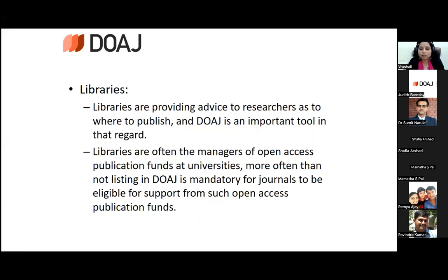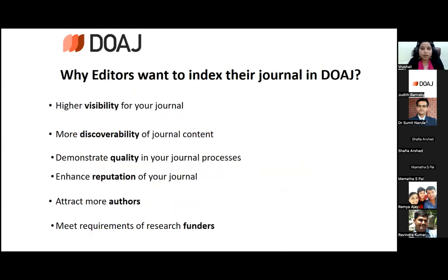For libraries — as I am a librarian — it is helpful because we often face problems with finance and funding to subscribe to databases. It helps advise researchers where to publish. We have given links to Open Access journals on our library website. For editors who want to index their journals in DOAJ: it will give higher visibility, more discoverability of journal content, and enhance your journal's reputation. After indexing, you can use the DOAJ logo, attract more authors, and meet requirements from research funders. In India, the Medical Council of India has now made DOAJ indexing mandatory.